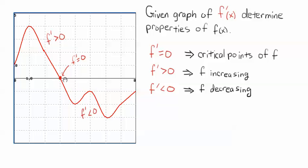And then we hit a critical point here. This is where f prime is zero, and then f prime is below the x-axis here, so f prime is less than zero. That means f is increasing to the left of this critical point, and f is decreasing to the right of this critical point.